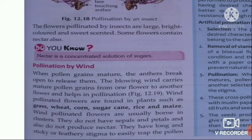In wind-pollinated plants, the stigma is long, hairy, sticky, or feathery. This stigma will trap the pollen grains carried by the wind.